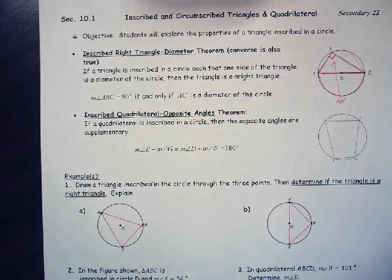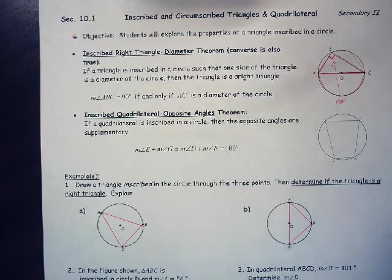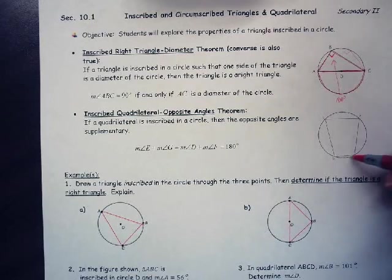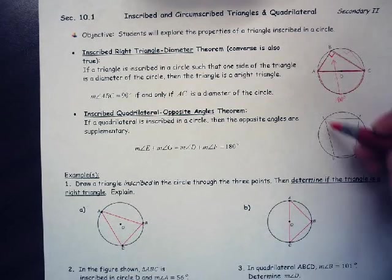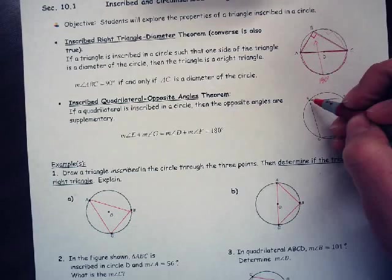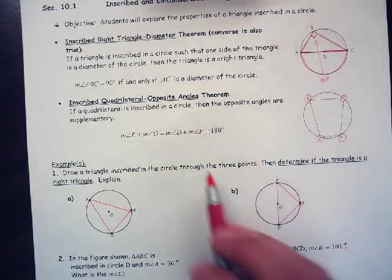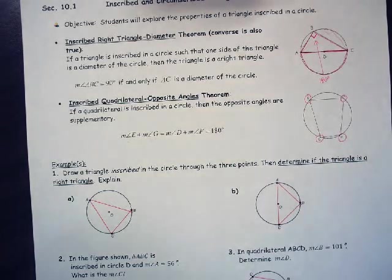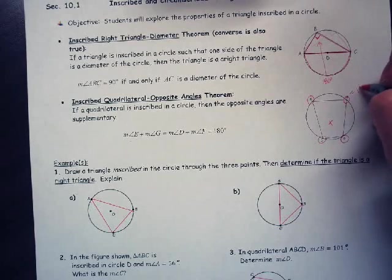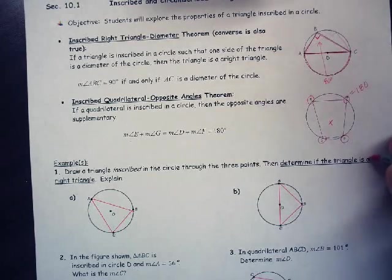The other property says inscribed quadrilateral opposite angles theorem. If I have a quadrilateral inscribed in a circle, that means it's drawn inside a circle. All four of the vertices are on the circle. Then the opposite angles are supplementary. So angle E plus G would equal 180 degrees, and D plus F would equal 180 degrees. If I add those two together, they're going to equal 180. Same going this way.